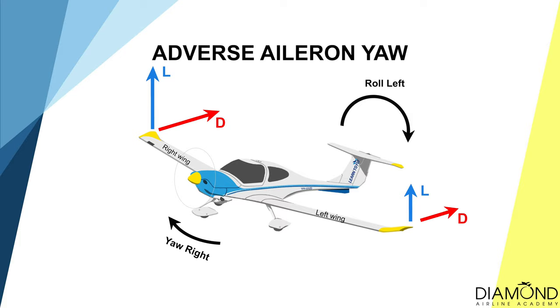So how do we stop adverse aileron yaw? The key is the rudder. If we are banking to the right, apply a bit of right rudder. If we are banking to the left, apply a bit of left rudder. If the amount of rudder applied is correct, adverse aileron yaw will be completely eliminated.